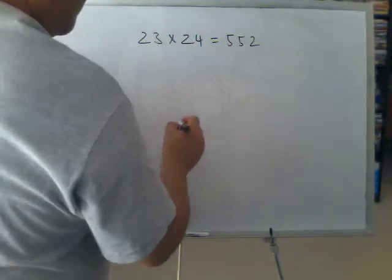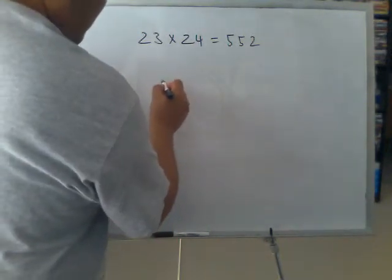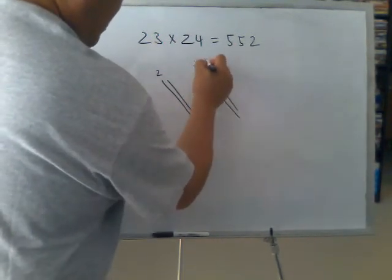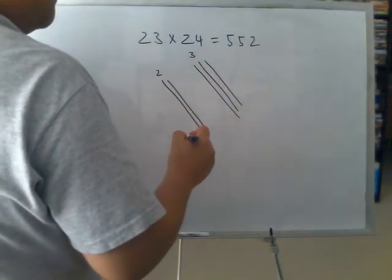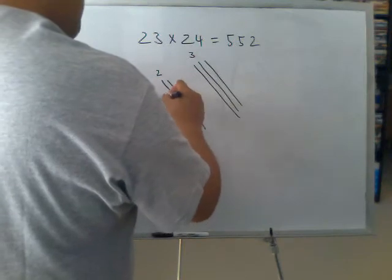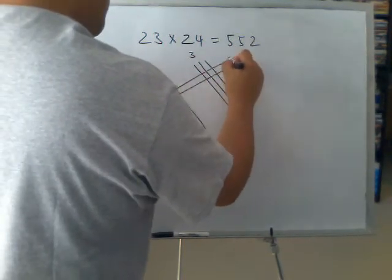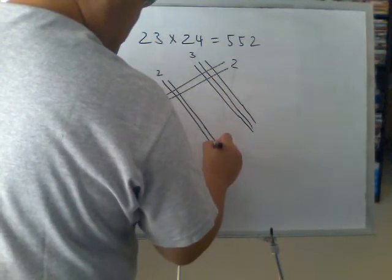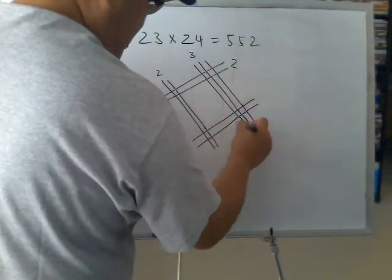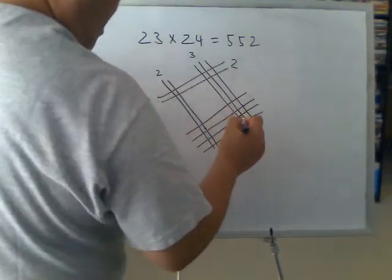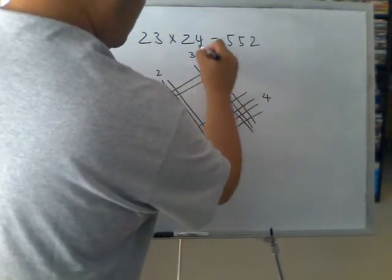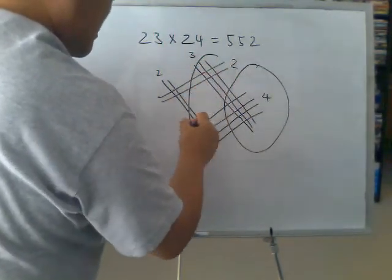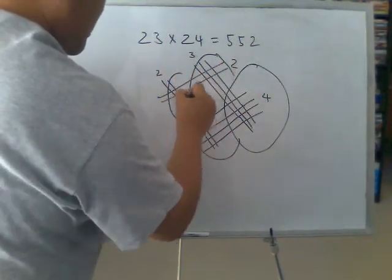So let's draw the diagonals again. This is 2, this is the first digit. And we draw 3 lines for the second digit. 24, and let's draw 4 lines for the second digit of 24. And maybe we should draw these lines a little longer. So let's count this number and this number.